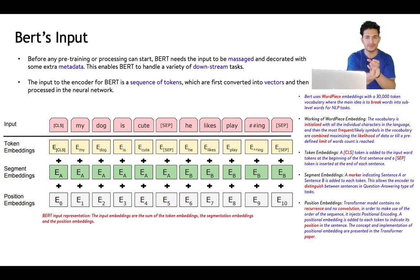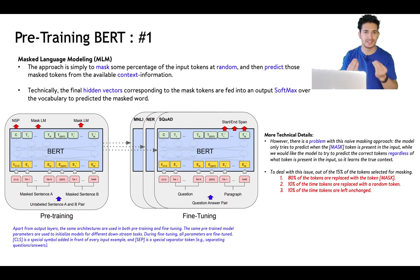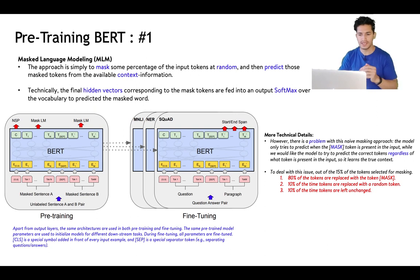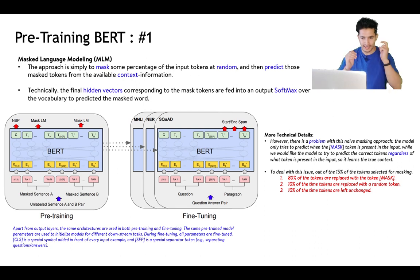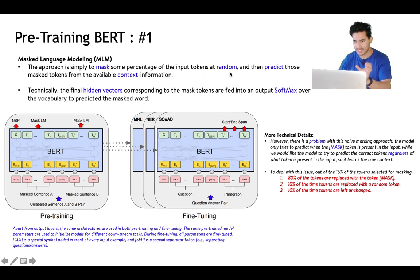The magic lies in BERT's pre-training. BERT is trained on the Wikipedia corpus on two tasks. It is a pre-trained language model that you can fine-tune for your task. The first task is Masked Language Modeling: some percentage of input tokens are masked at random and the model must predict those masked tokens from the available context information.